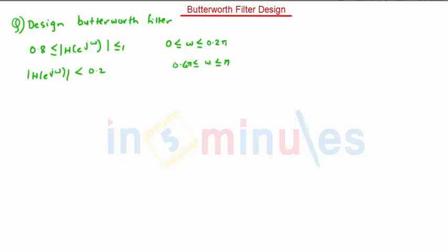we are going to solve a sum based on Butterworth filter design using bilinear transformation. The conditions are as follows. Now these are the conditions but we are not able to specify which are the terms and what is the meaning of these terms. For finding out the meaning of each term, it is necessary to draw a characteristic plot for digital filter.